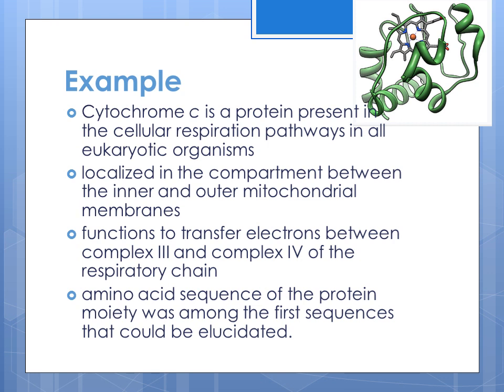Let's make it easier by studying an example — that is cytochrome C. Cytochrome C is a protein present in the cellular respiration pathway in all eukaryotic organisms. It is a heme protein localized in the compartment between the inner and outer mitochondrial membrane, where it functions to transfer electrons between complex 3 and complex 4 of the respiratory chain.